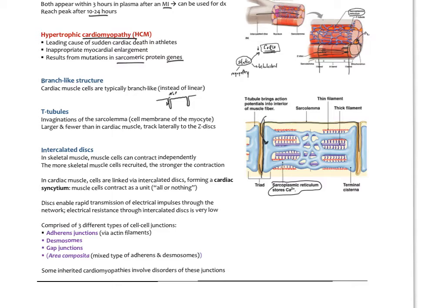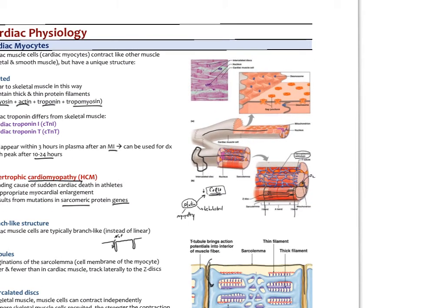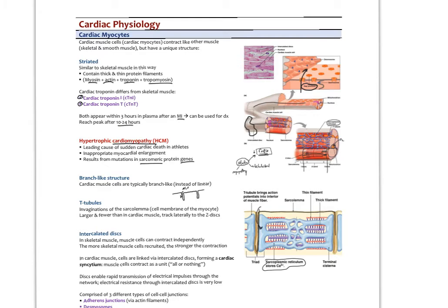Finally, myocytes have what are called intercalated discs — they're joined by these little discs, visible as a little squiggly line. The intercalated disc joins two cells together and they have gaps called gap junctions that allow ions to flow from one cell to another. This allows rapid ion exchange between cells, giving the cardiac muscle the property of acting not just as a single cell, but as a large group of cells all acting in unison.